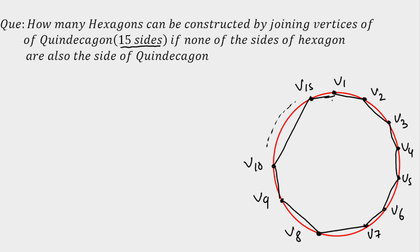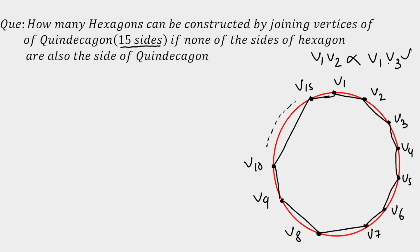Let's build the logic here. If I select, say, 6 vertices of the hexagon and I include v1 and v2 — the moment I join v1 and v2, that segment is a side of the quindecagon, so this is not possible. Instead, if I select v1 and v3, yes, it is possible because v1–v3 is not a side of the quindecagon but can be a side of the hexagon.